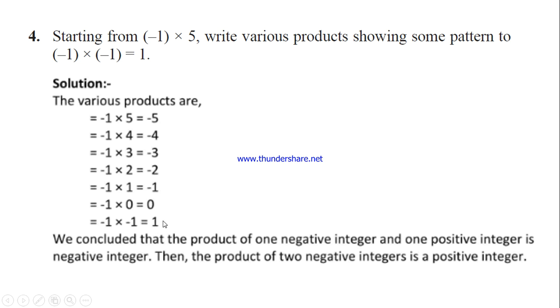We concluded that the product of one negative integer and one positive integer is negative. Then the product of two negative integers is a positive. From this, the product of one negative and one positive is becoming negative integer. Product of two negative integers is a positive.